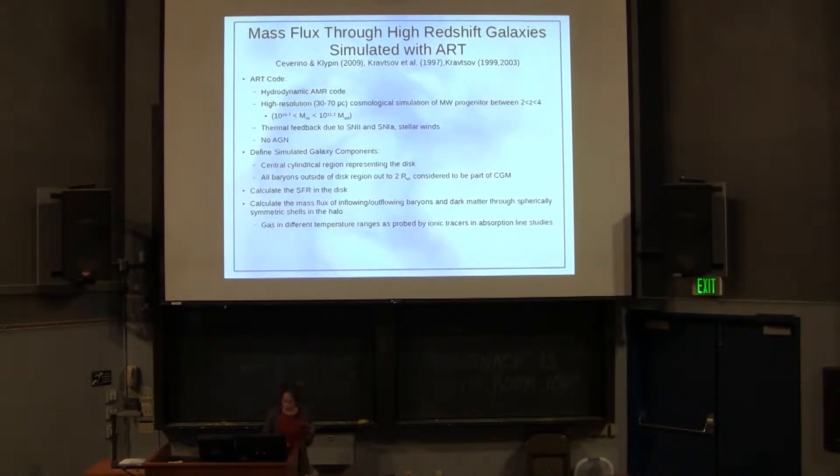The ART code has already been described, but in brief it's a hydrodynamic AMR code with high resolution, 30 to 70 parsec in a cosmological setting. What we are using in this study is a Milky Way progenitor between redshift 2 and 4. There's thermal feedback in this model due to supernovae types 1 and 2 and stellar winds, and there's no AGN.